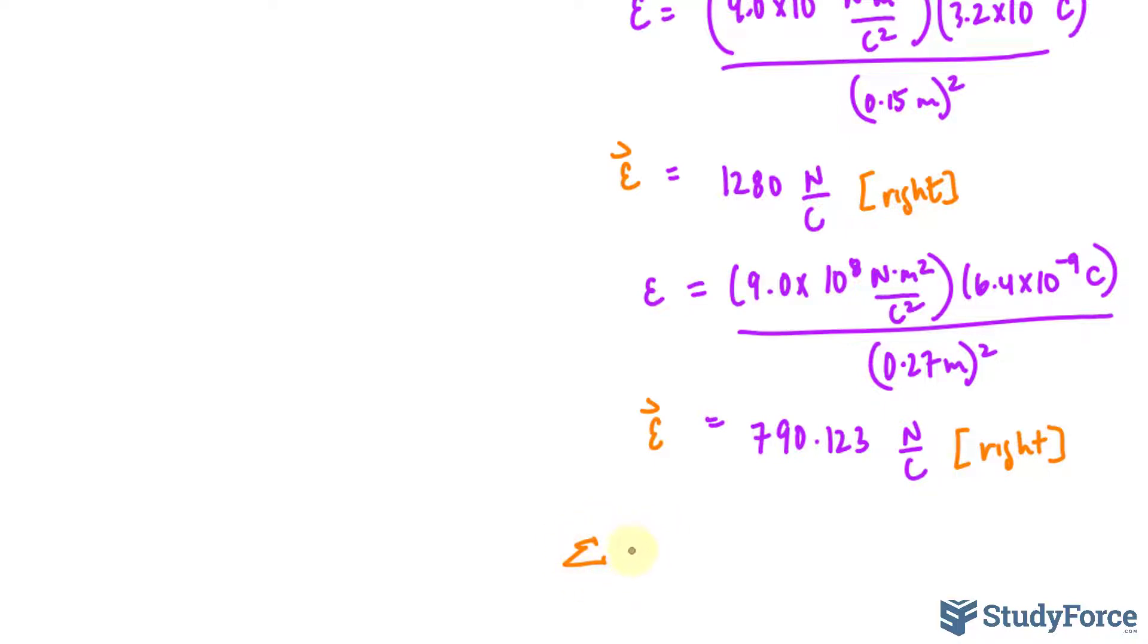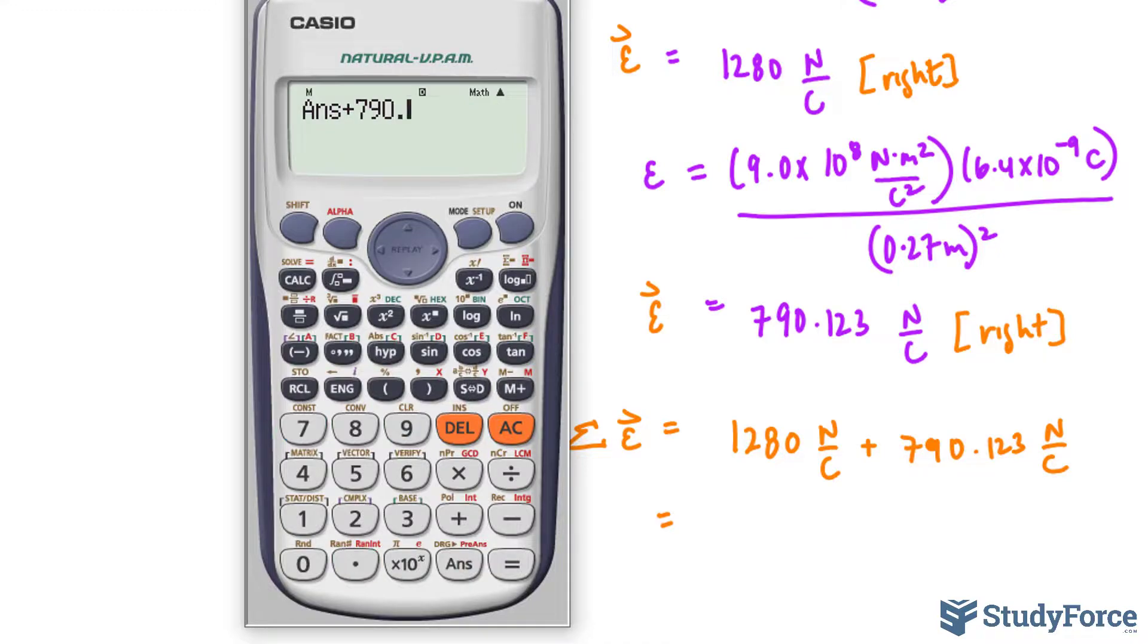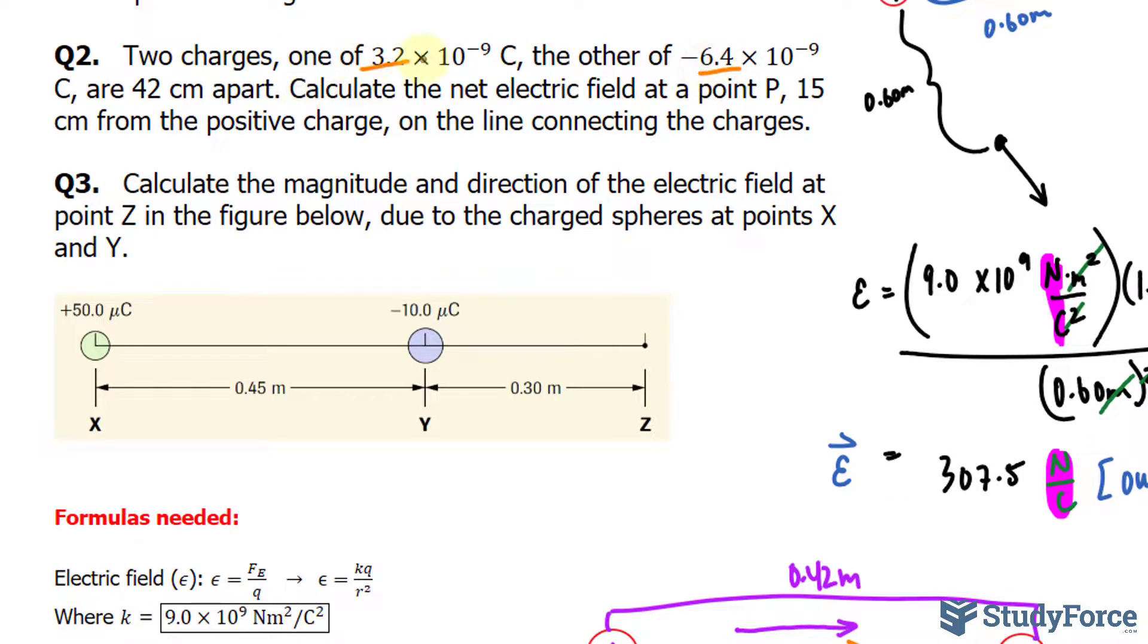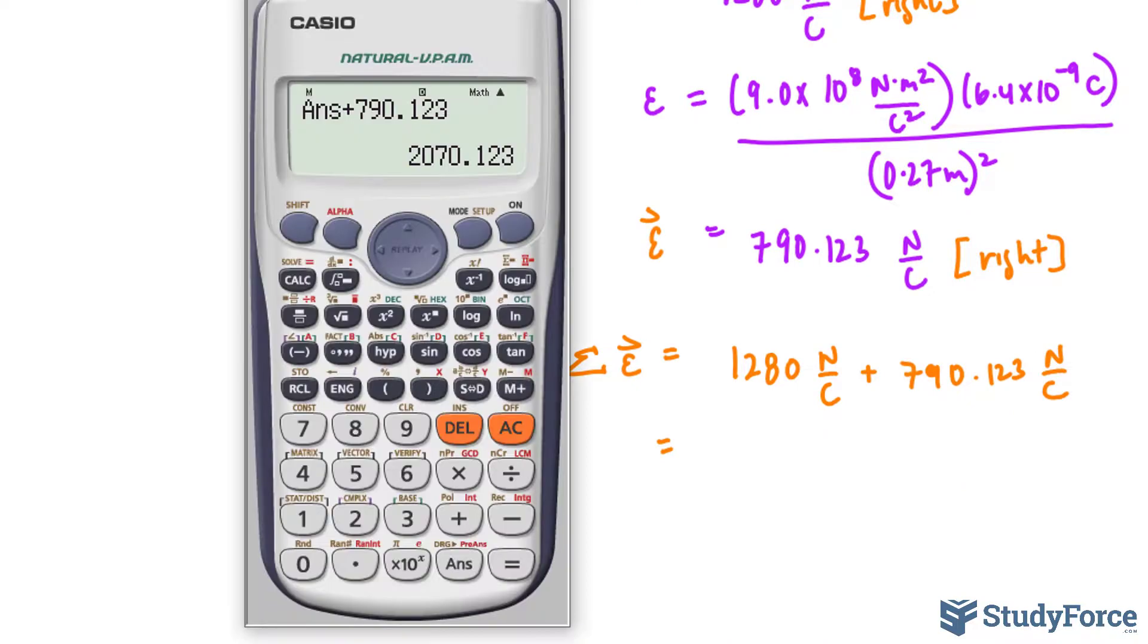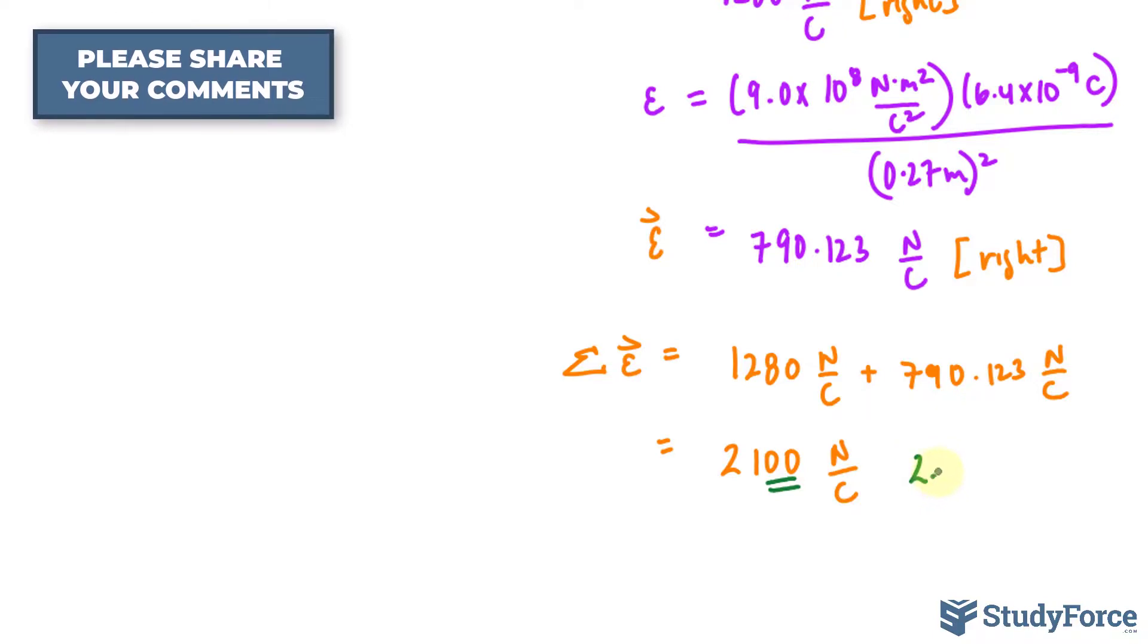We will now combine 1,280 newtons per coulomb plus 790.123 newtons per coulomb. Using our calculator, the number on our screen plus 790.123. We need this to two significant figures because we started off with two significant figures. So this sum to two significant figures is 2,100 newtons per coulomb. Remember that these two trailing zeros here are insignificant. You can write it out like this or 2.1 times 10 to the power of 3 also works.